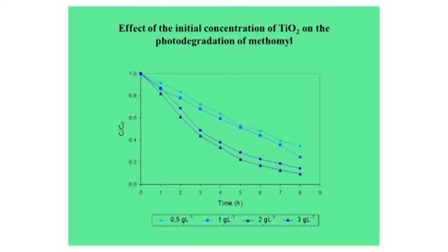This slide shows the influence of the initial concentration of semiconducting oxide used as photocatalyst on the photodegradation rate of methomyl. In our experiments, we used four catalyst concentrations — 0.5, 1, 2, and 3 grams per liter — and we found that the best catalyst concentration was titanium dioxide at 2 grams per liter.